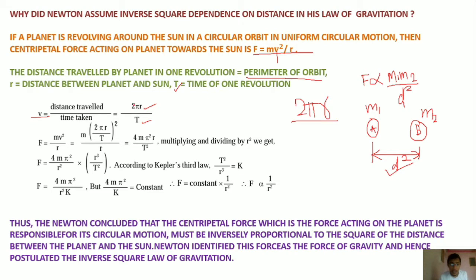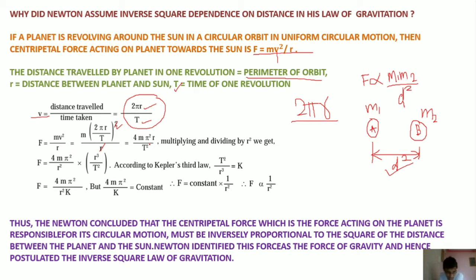In the centripetal force formula F = mv²/r, we replace v with 2πr/T. So we get F = m × (2πr/T)² / r. Squaring the bracket gives 4π²r²/T², and dividing by the remaining r in the denominator, one r cancels, leaving: F = 4mπ²r / T². This is the centripetal force expressed in terms of r and T.